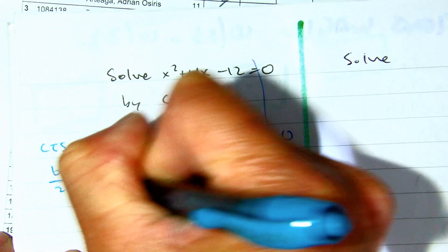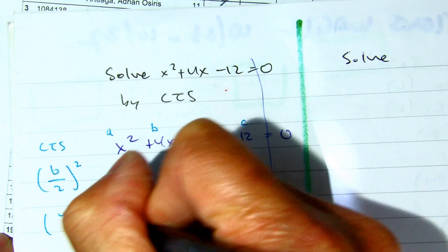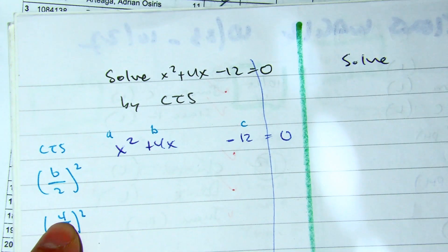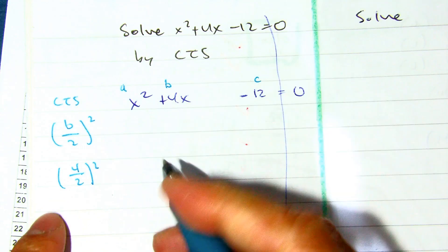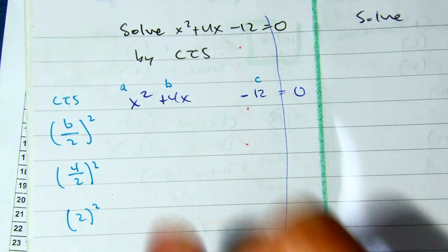I take the b value, cut it in half, and square. So my b value is 4, there's my substitution. Half of 4 is 2, and 2 squared is 4.